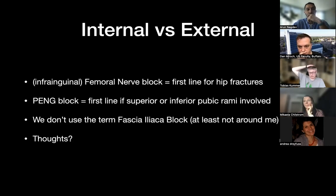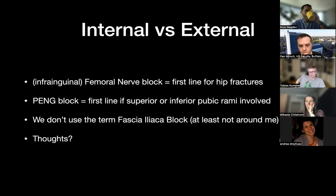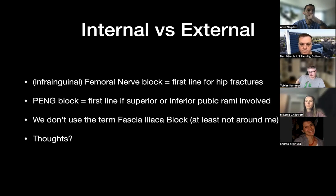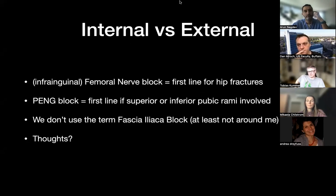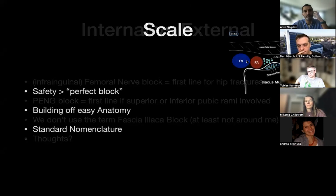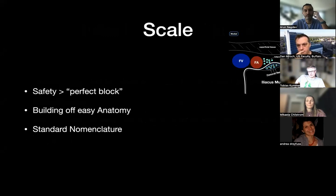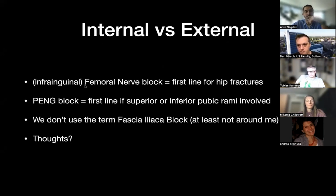For us, we use fascia iliaca mainly because that's what anesthesia uses and it's what everybody knows at the institution. For me, the femoral nerve block — if you're right on the nerve with dense anesthetic — you probably have more motor dysfunction. That might be myth or not, but the fascia iliaca block feels more like a higher-volume, lower-concentration block that gets you maybe more analgesia but less dense motor block. Our ortho colleagues are definitely afraid of dense motor blocks of the femoral nerve because of post-op rehabilitation. That's kind of why we use more of the term fascia iliaca block.